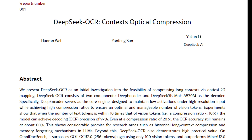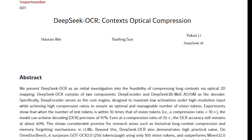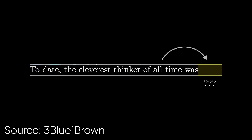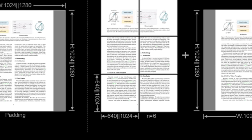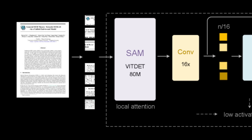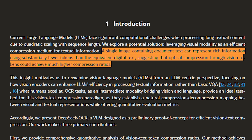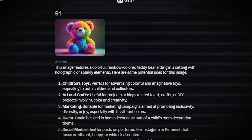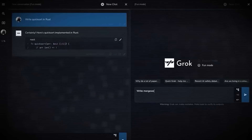DeepSeek introduced this paper alongside a new open source model. What they proposed is this: what if instead of breaking sentences into words and subwords and calling them tokens to feed into a language model, we took the image of a document and broke the image into smaller patches and fed that into the model? They show that the most obvious benefit is that a single image containing document text can represent rich information using substantially fewer tokens, suggesting that optical compression through vision tokens — the patches — could achieve much higher compression ratios. That means for the same amount of compute, we can have 10 to 20 times larger context windows, because the information is better compressed.